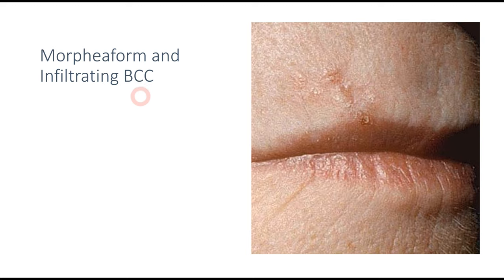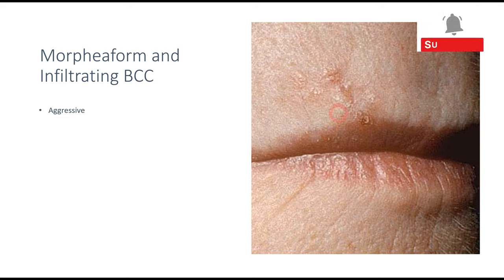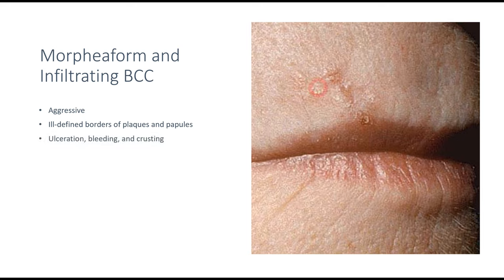The last subtype is morpheaform and infiltrating basal cell carcinoma. In this clinical picture you can see small lesions near the upper lip. Similar to micronodular basal cell carcinoma, this is aggressive in nature. An important difference is that the borders are not well defined — it appears as a plaque or papule. Unlike micronodular, these lesions ulcerate, bleed, and then lead to crusting as you can see in this picture. Since its appearance is quite similar to scar tissue, it can be mistakenly thought to be a scar, when in fact it may be morpheaform or infiltrating basal cell carcinoma.